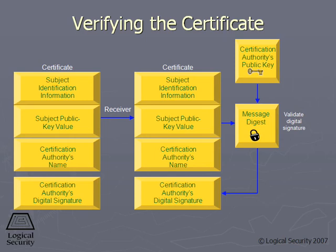You validate the signature by taking the public key of the CA and decrypting the digital signature, extracting the message digest value, and then comparing that to the message digest value you created individually. If they match, then you know that the certificate has not been modified. You also know, because you used that CA's public key and were able to decrypt the signature, that it actually came from the CA that you trust. That's really what this whole thing is about — your system trusts the CA and validates that this digital certificate actually came from the entity you trust.